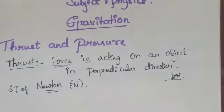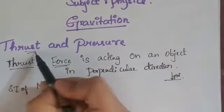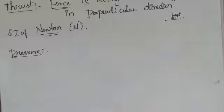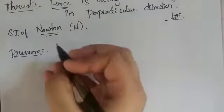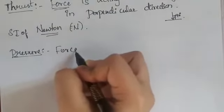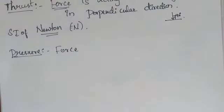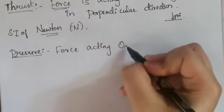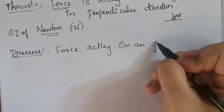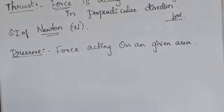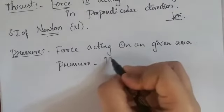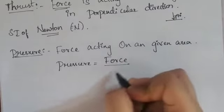Similarly, the next concept after thrust is pressure. What is pressure? Pressure is nothing but a force acting on a given area — or I can say the thrust acting on a given area. Thrust or force acting on a given area is called pressure. There is a formula: pressure equals force divided by area.